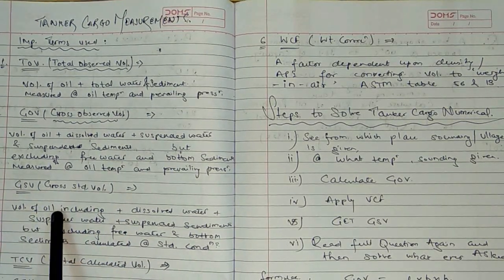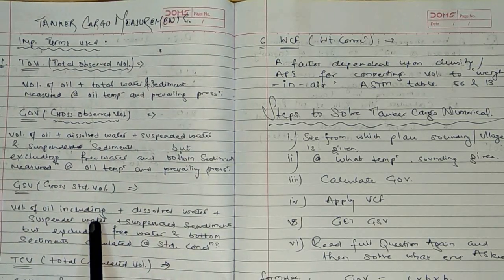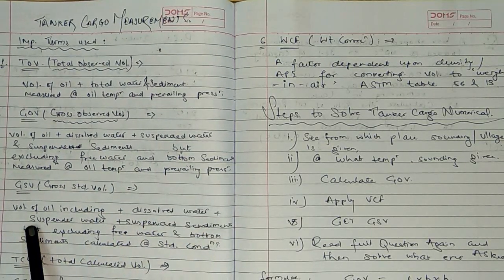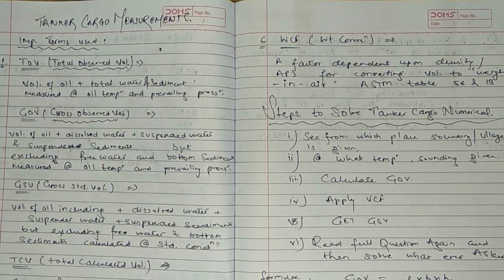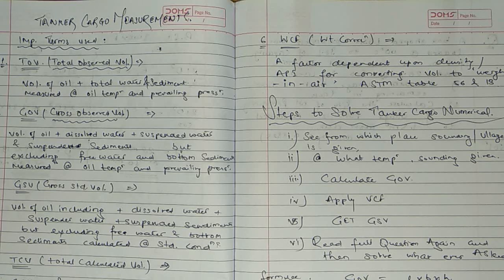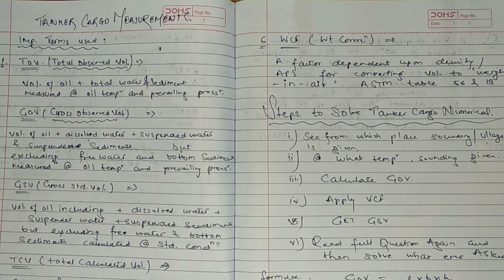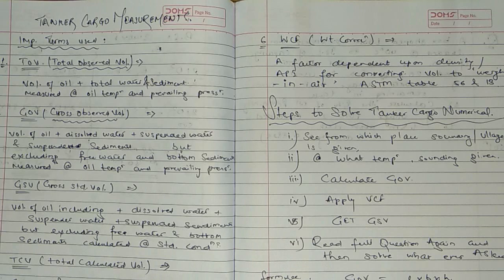GSV is the volume of oil including dissolved water, suspended water, and suspended sediment, but excluding free water and bottom sediment, calculated at standard conditions. We calculate GSV for a particular temperature given in the question. Free water is not included in GSV.